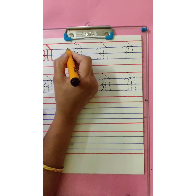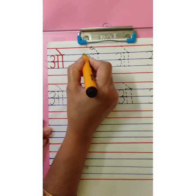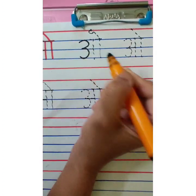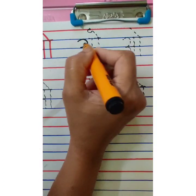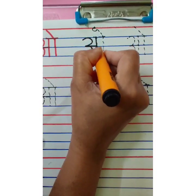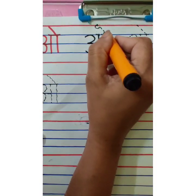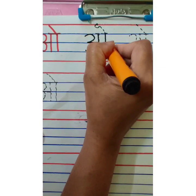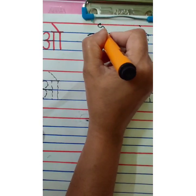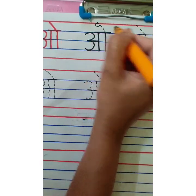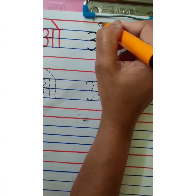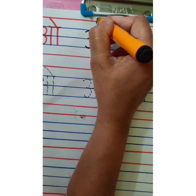Start with the first blue line. Write number 3. Then sleeping line. Then standing line. This is A. One more standing line. This is A. Then overhead small sleeping line, and then you have to give matra.